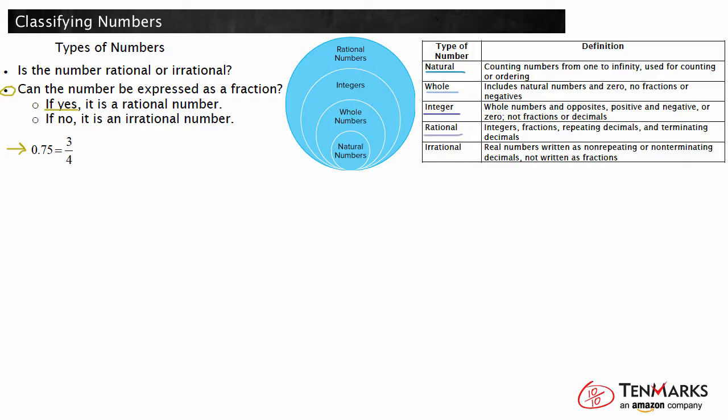Rational numbers are integers, fractions, repeating decimals, and terminating decimals. Irrational numbers are real numbers that can be written as non-repeating or non-terminating decimals. Irrational numbers are not fractions. It is important to use the chart to help you define the specific characteristics of a number.